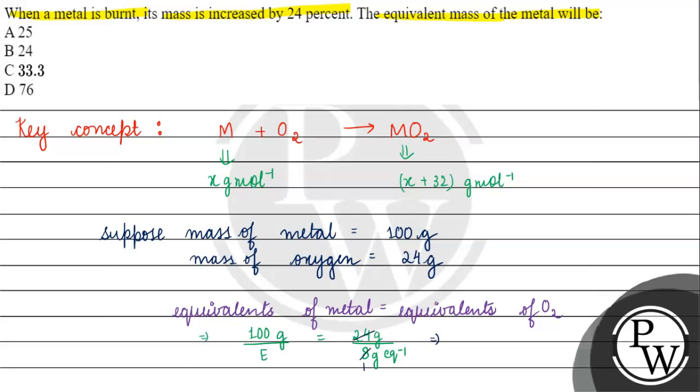So we cross-multiply: 100 by E equals 24 by 8. This gives 100 by E equals 3, so the equivalent weight of metal is 33.3 grams per equivalent.